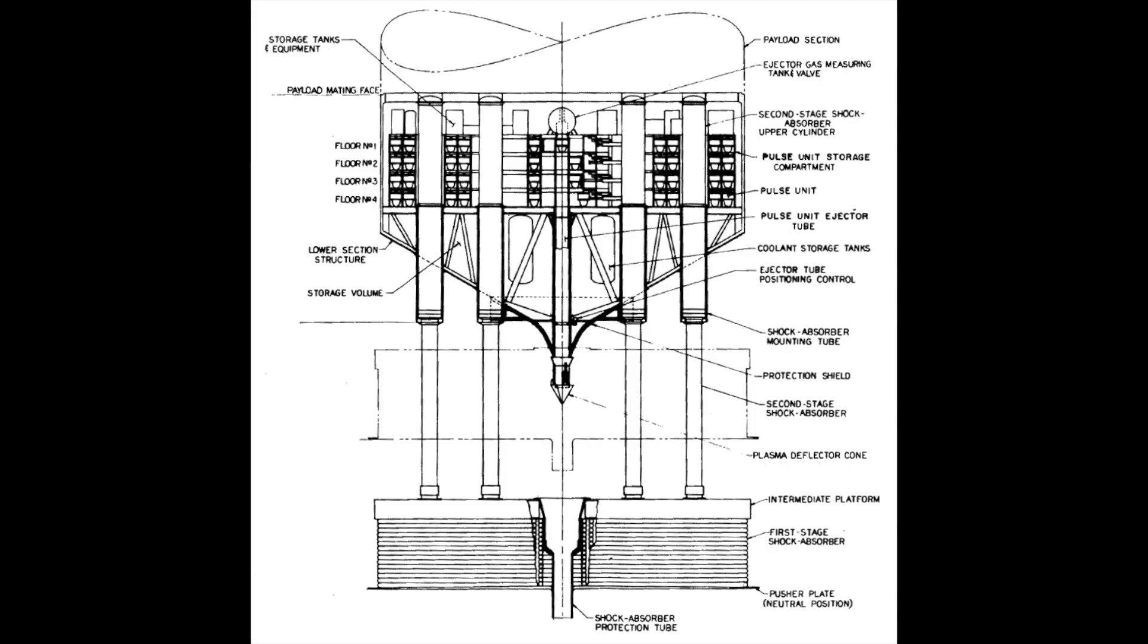Project Orion's propulsion units consisted mainly of inert materials to transmit detonation force to the pusher plate and minimize fallout. Some designs proposed using the pusher plate as nuclear fuel in another star system. Orion was initially intended for interplanetary space flights, including single-stage missions to destinations like Mars and Saturn's moons.